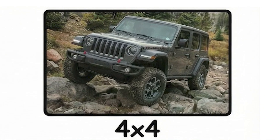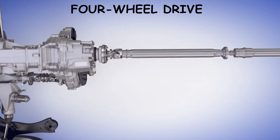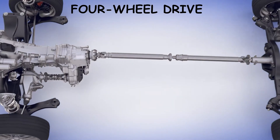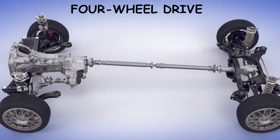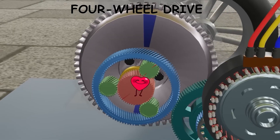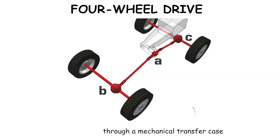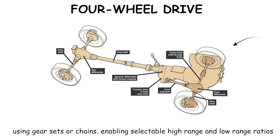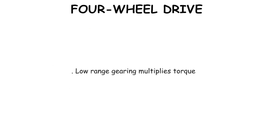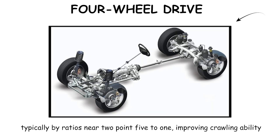Four Wheel Drive, abbreviated as 4WD or 4x4, is a drivetrain configuration where engine torque is distributed to all four wheels through a mechanical transfer case. The transfer case splits power between front and rear axles using gear sets or chains, enabling selectable high range and low range ratios. Low range gearing multiplies torque, typically by ratios near 2.5 to 1, improving crawling ability at low speeds.